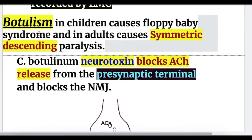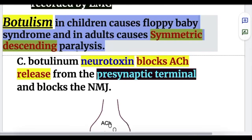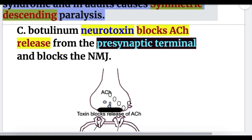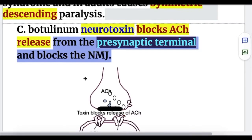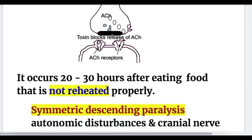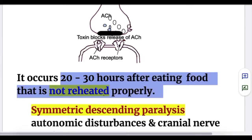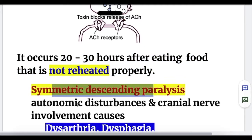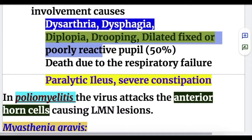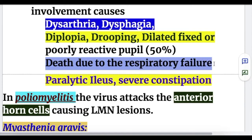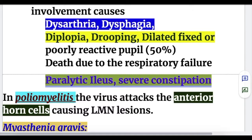Botulism causes floppy baby syndrome in children and symmetric descending paralysis in adults. Clostridium botulinum neurotoxin blocks acetylcholine release from the presynaptic terminal, occurring 20–30 hours after eating improperly reheated food. Features include symmetric descending paralysis, autonomic disturbances, dysarthria, dysphagia, diplopia, drooping eyelids, and dilated fixed pupils poorly reactive in 50% of cases, with death from respiratory failure and paralytic ileus with severe constipation.